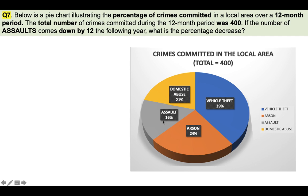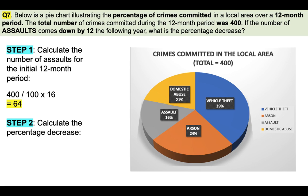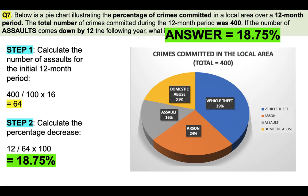We are focusing here on assaults — it's currently at 16%. Step one: calculate the number of assaults for the initial 12-month period. That's 16% of 400. To calculate that: 400 divided by 100, multiplied by 16, equals 64. Now to calculate the percentage decrease, all we need to do is use the decrease number — which is 12 — divided by 64 (the total number), multiplied by 100, which gives us the answer 18.75%. So if you just take a second to absorb that process, you can then use it to answer the question that's coming right now.